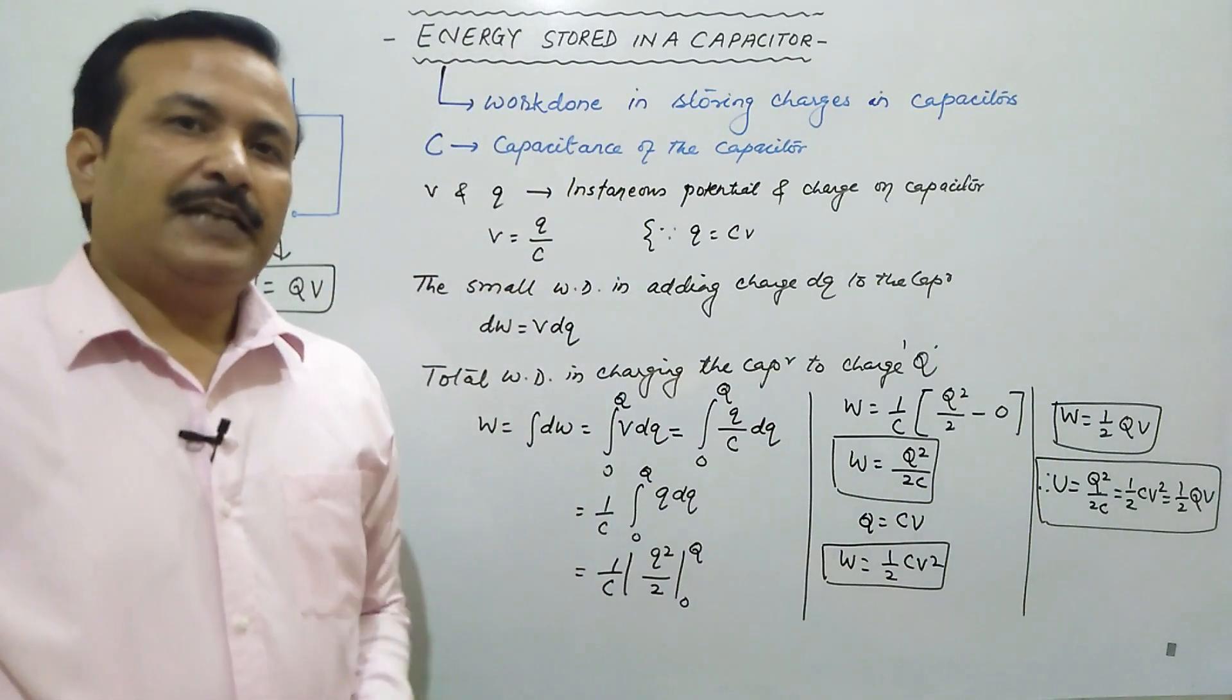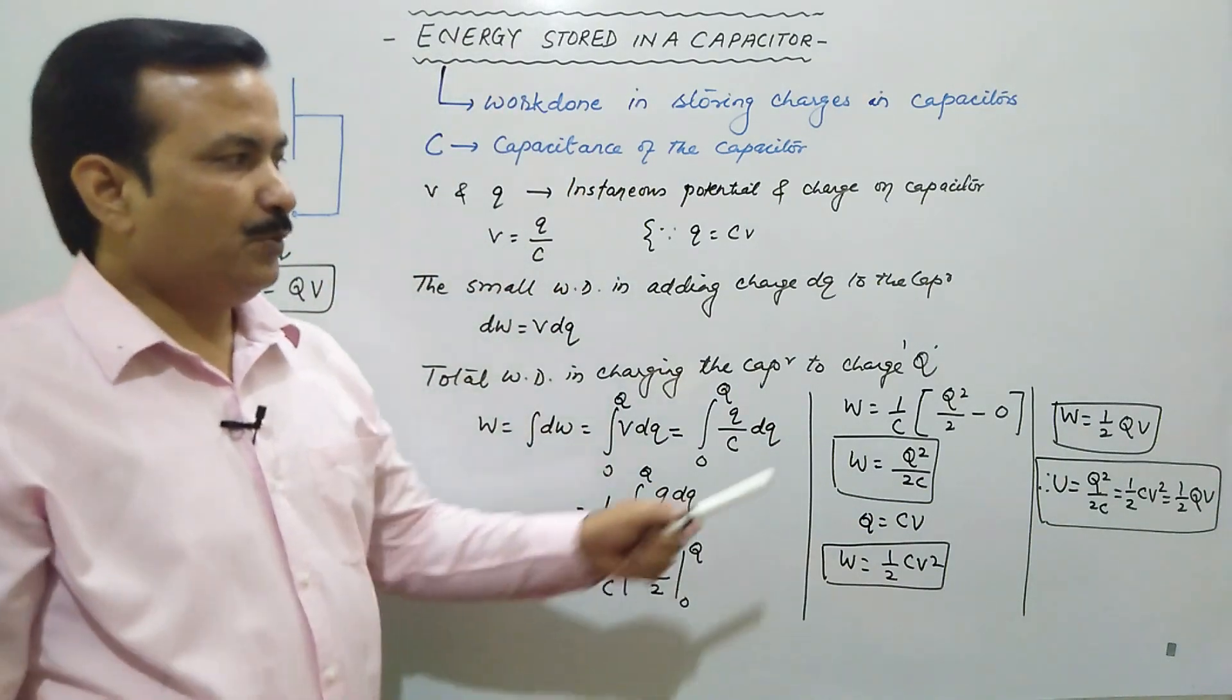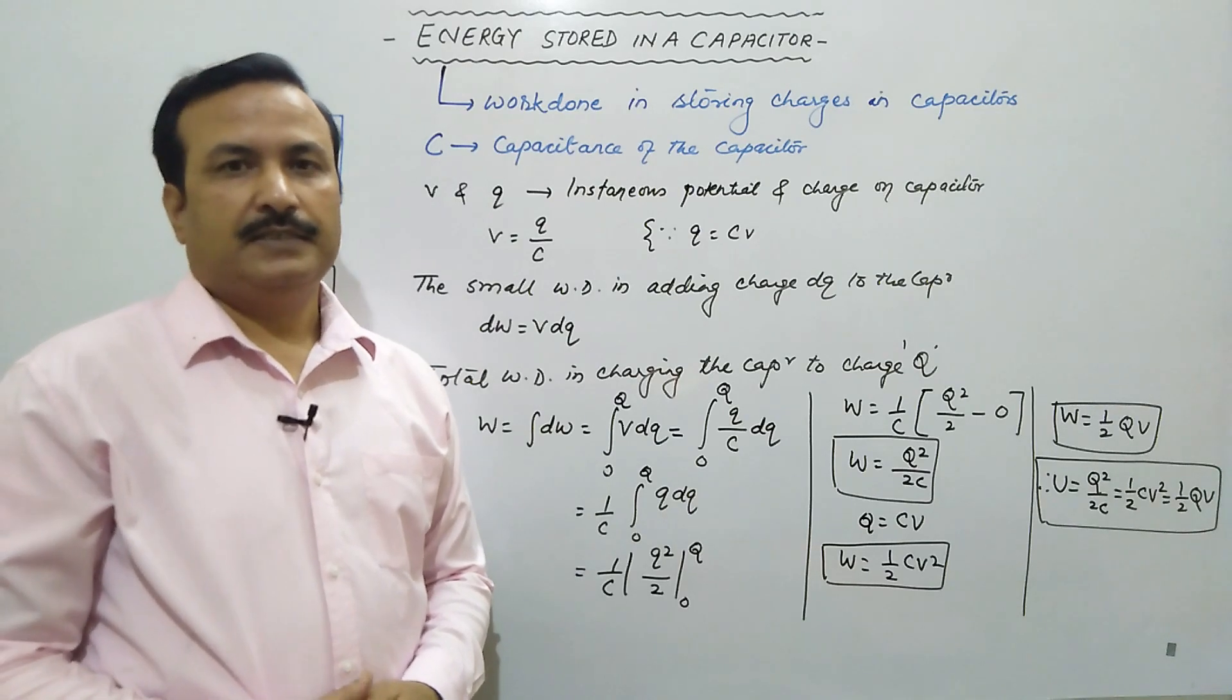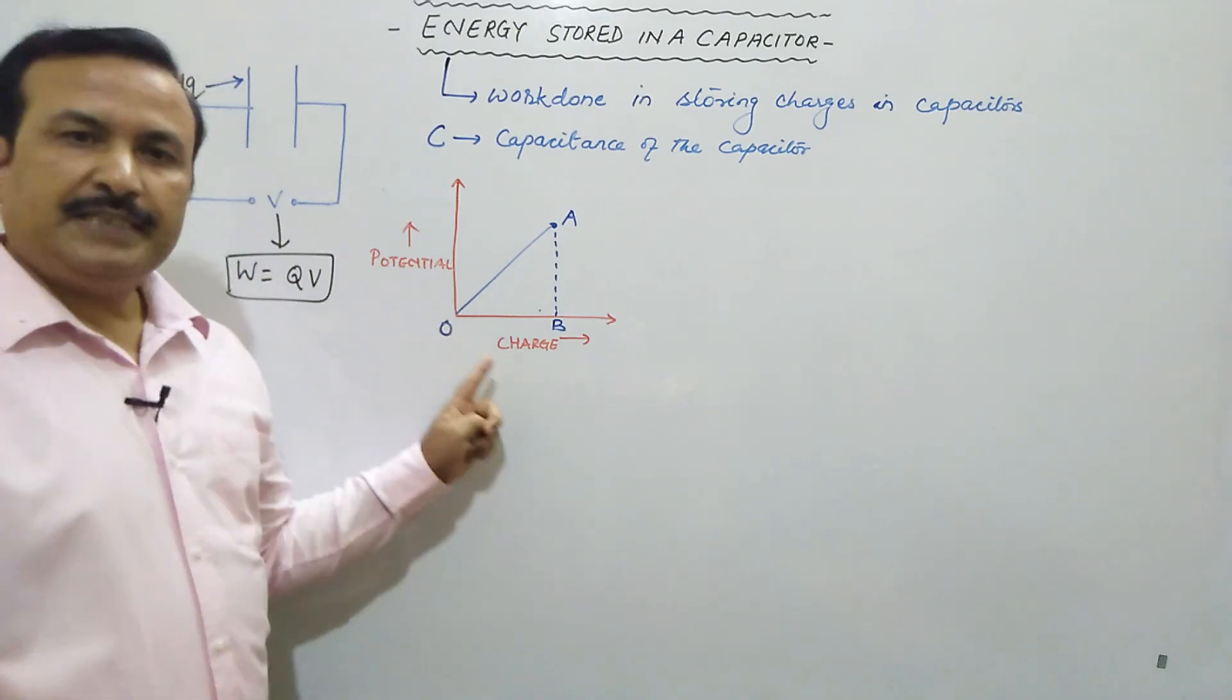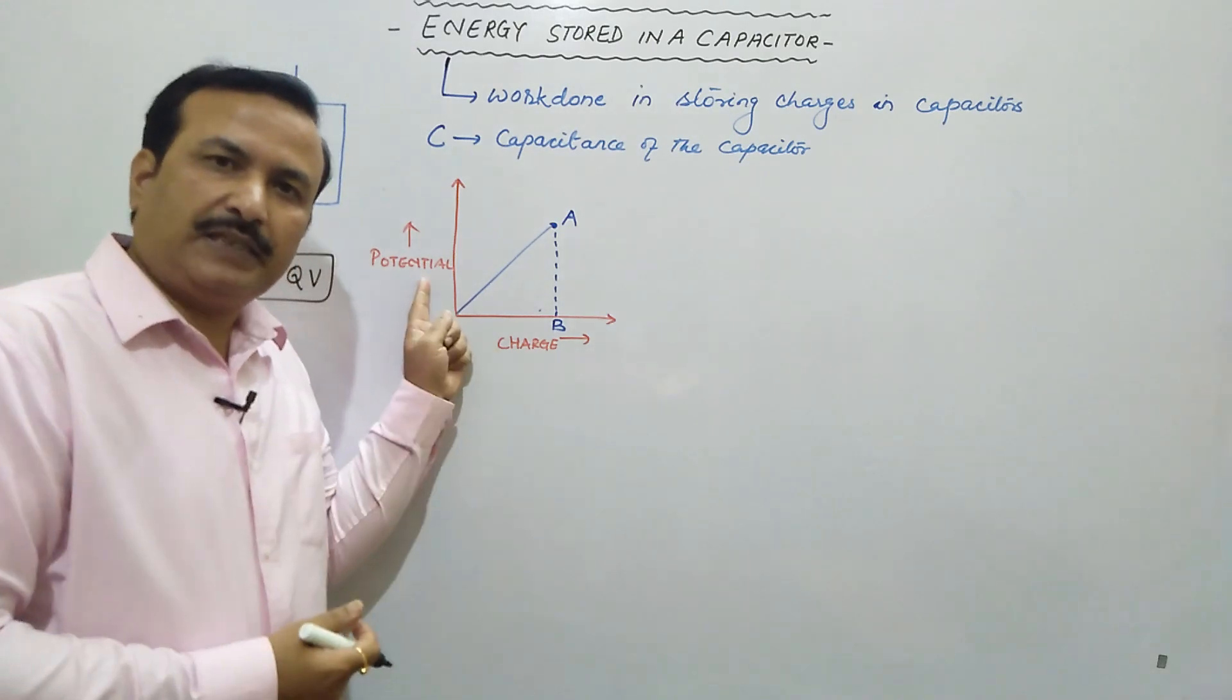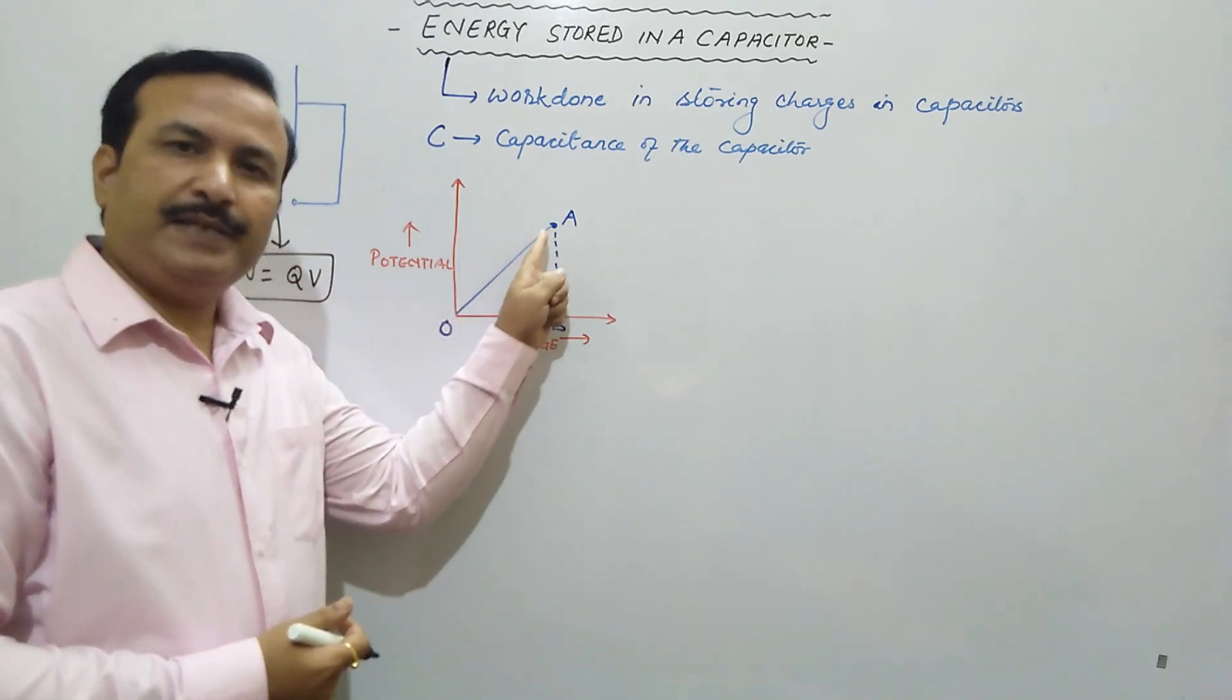If you want, you can also draw the graph between Q and V. How will it be drawn? Let's see that also. Draw the graph between potential and charge. When we increase charge, potential increases, so obviously the graph will be a straight line.